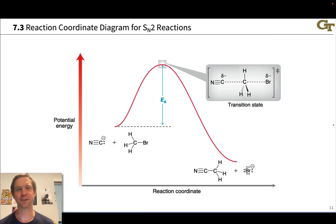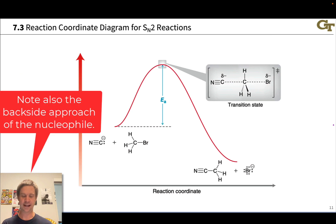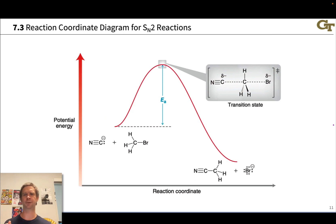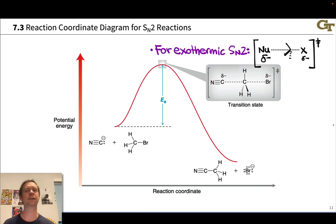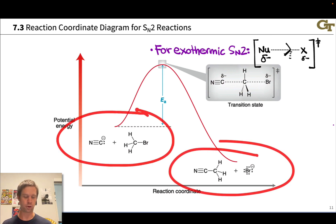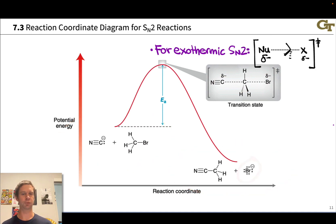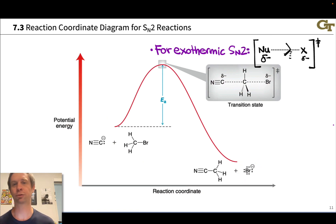The reaction coordinate diagram for SN2 reactions is delightfully simple. It's a one-step reaction with one transition state, in which we have partial bonding between the nucleophile and the central carbon and between the leaving group and that central carbon, with partial charge generally on the nucleophile and leaving group, and approximately trigonal planar geometry. For an exothermic SN2, the transition state will look a bit more reactant-like. This reaction is exothermic overall because Br⁻ is a good leaving group, and CN⁻ is a less stable anion than Br⁻ — which we could justify using pKa values or structural stability factors.